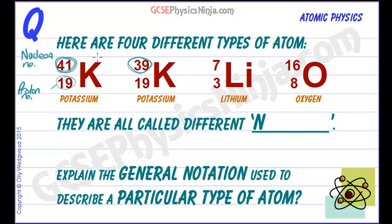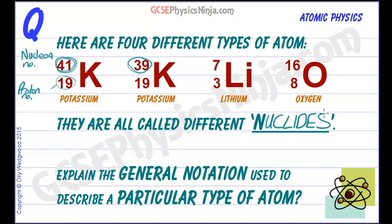These have got a special name — they're called isotopes. But back to this flashcard: different types of atom which have got different numbers of protons or neutrons in the nucleus are called nuclides — different nuclides.